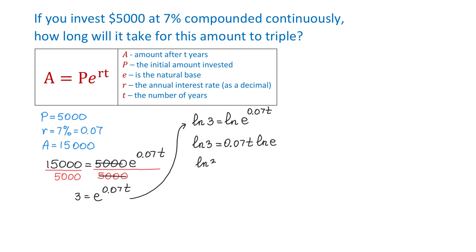Then we will have natural logarithm of 3 equals 0.07t. And now let's divide both sides by 0.07.